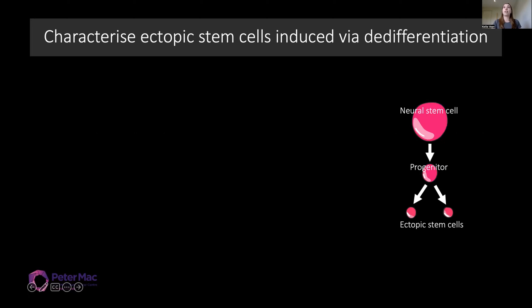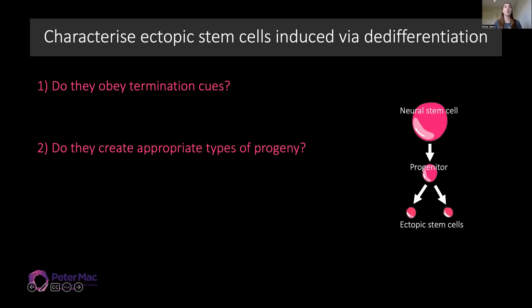I've addressed three main criteria in order to characterise these ectopic stem cells: whether they can obey termination cues, whether they create the correct types of progeny, and also the correct numbers of progeny.